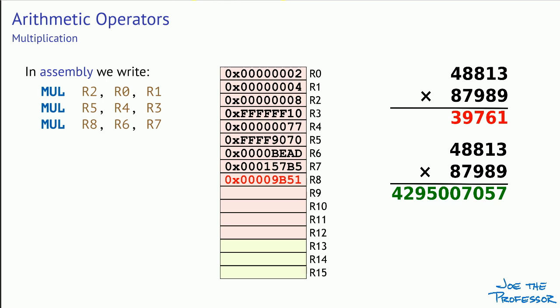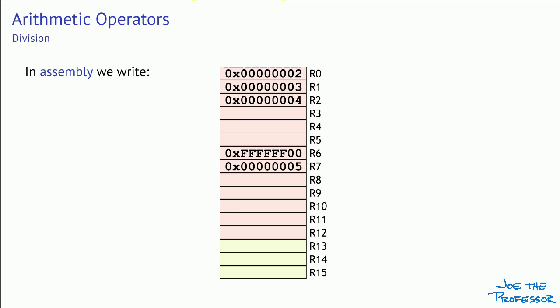If you really need to multiply large numbers, the Cortex-M3 and M4 have long multiply instructions that return a 64-bit result. But these instructions are much slower than basic multiplication and require two registers to hold the result, so you should only use them when necessary. There are two basic instructions to perform division, one for unsigned values and one for signed values. The unsigned version divides the value in R2 by the value in R0 and puts the result in R3. Since 4 is evenly divided by 2 with no remainder, this is a simple example and we get the exactly correct result.